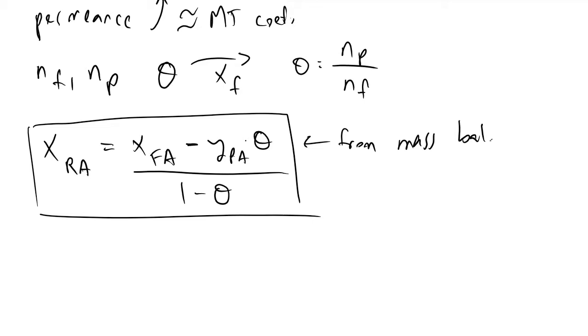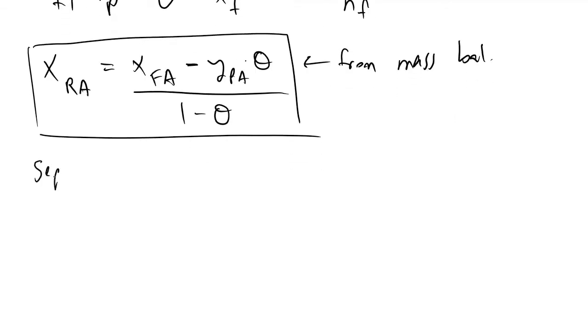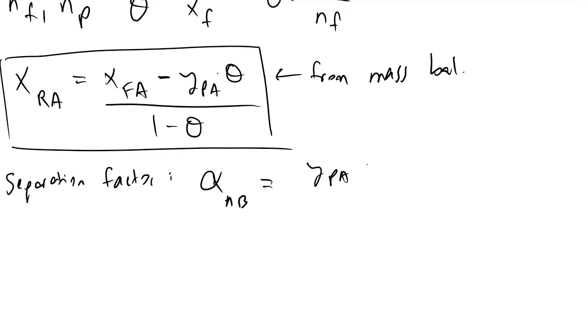We also define a quantity referred to as a separation factor that is commonly used in membranes. The separation factor is called alpha AB. Assuming we were working with some kind of binary system, it tells us the separation factor for this particular system, and it is equivalent to the permeate composition of species A divided by the retentate composition of species A, divided by one minus the permeate composition of your species A, and that quantity is divided by one minus XRA, the retentate composition of your species A.